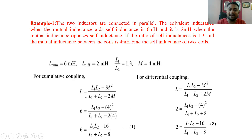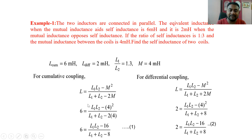The formula for parallel cumulative inductance is: L = (L1·L2 − M²) / (L1 + L2 − 2M). For the differential case, the denominator changes from minus 2M to plus 2M — this is the only difference between the cumulative and differential formulas. Substituting the cumulative equivalent of 6 milli Henry and M value of 4 into the formula, we get equation 1 and equation 2.